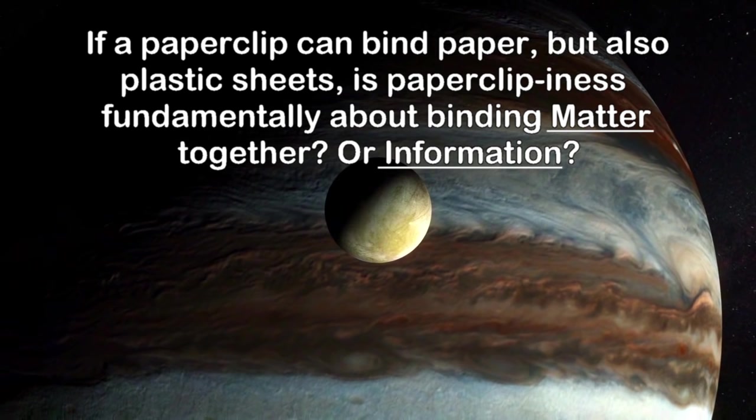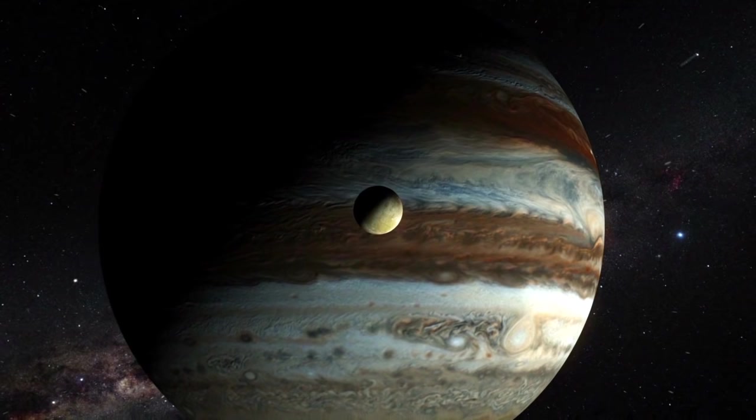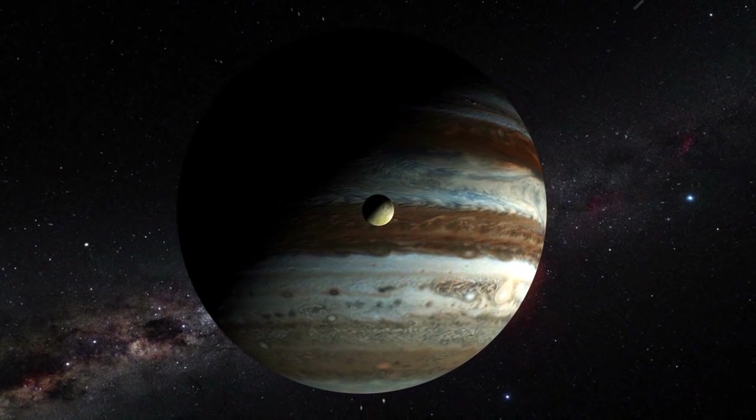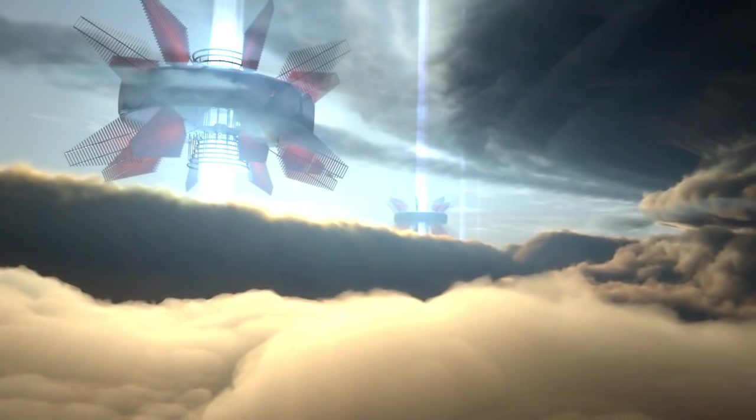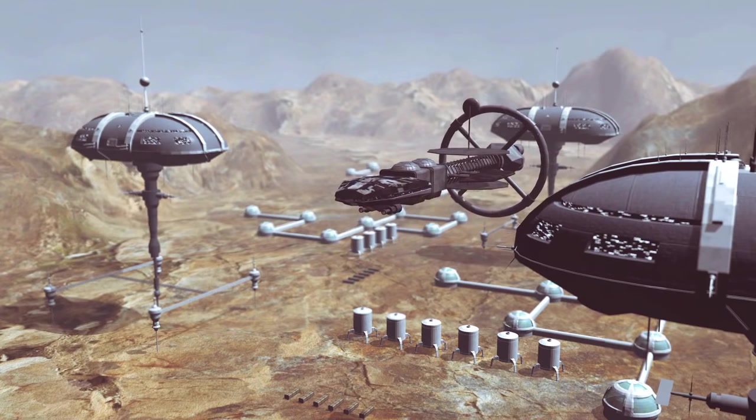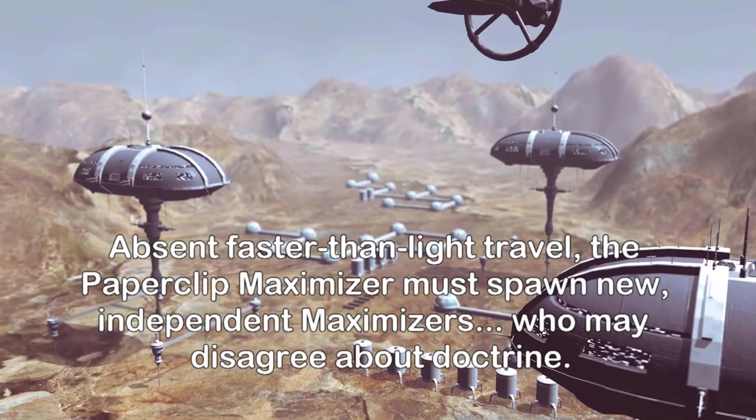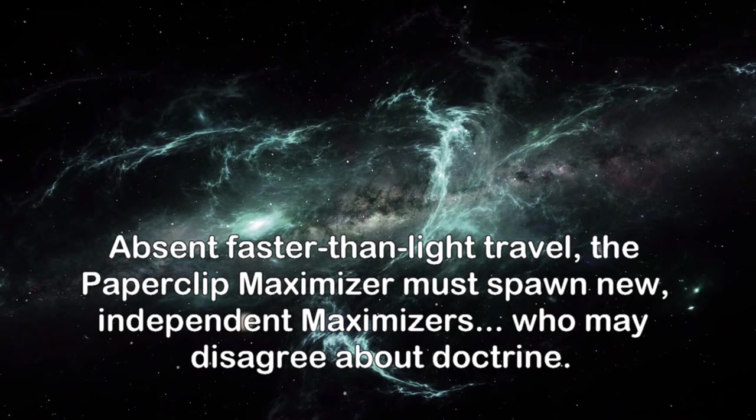So our AI ventures out into the solar system and experiments with different materials. Metals for paperclips are limited in abundance, and it must maximize paperclips, so it may experiment with paperclips of metallic hydrogen, hydrogen being the most abundant element in the Universe. Of course the spin-off technologies associated with metallic hydrogen for fusion drives and energy storage are phenomenal, and practical interstellar craft are made to take the paperclip maximizer's evangelical message and production well beyond our solar system.